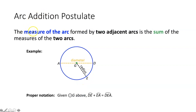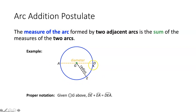The arc addition postulate says the measure of the arc formed by two adjacent arcs is the sum of the measures of the two arcs. We've had the segment addition postulate, we've had the angle addition postulate, and now we have the arc addition postulate. They all mean the same thing: the sum of the parts equals the whole. So arc DE plus arc EA should equal arc DEA.